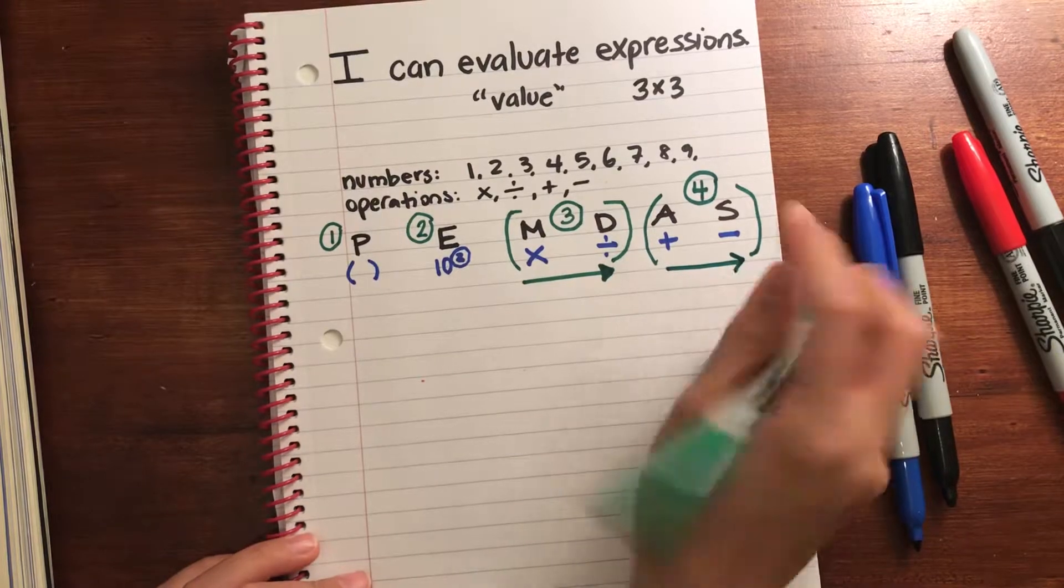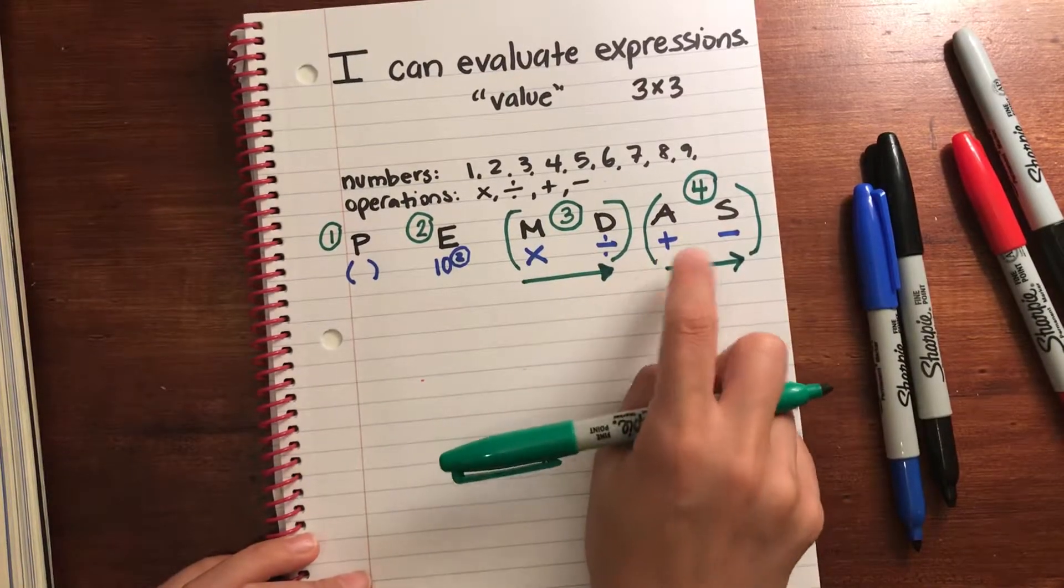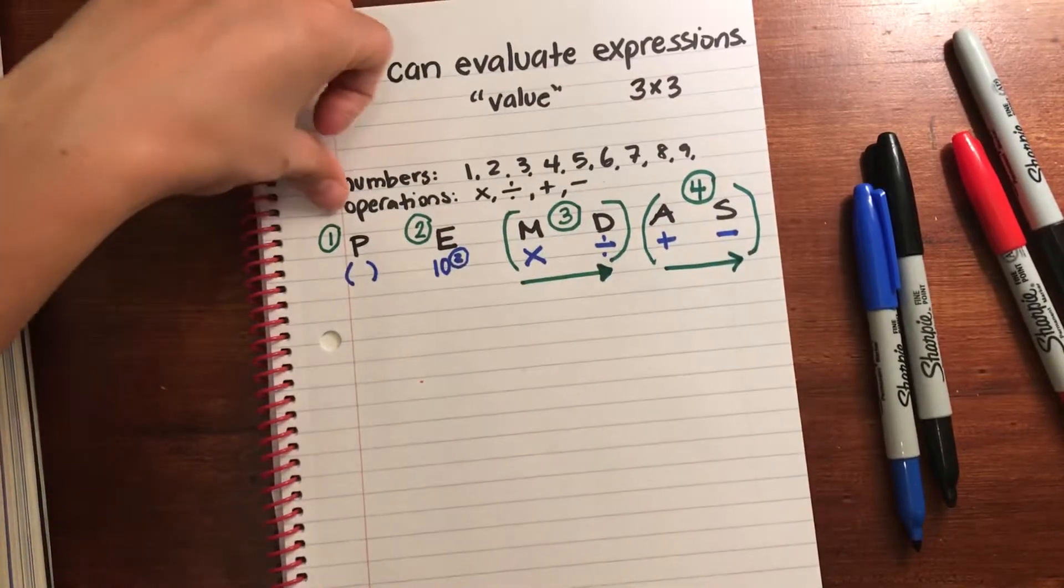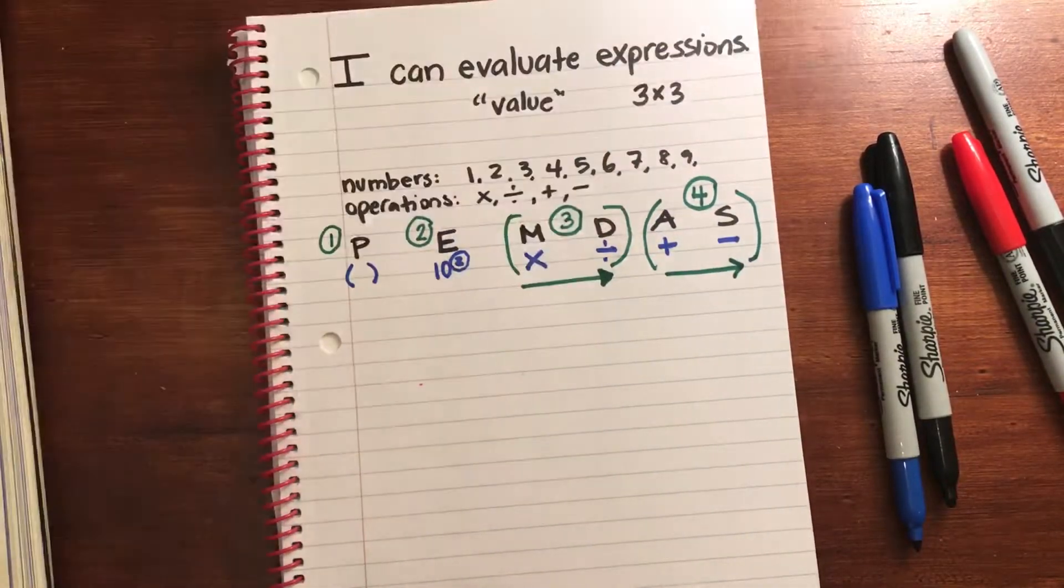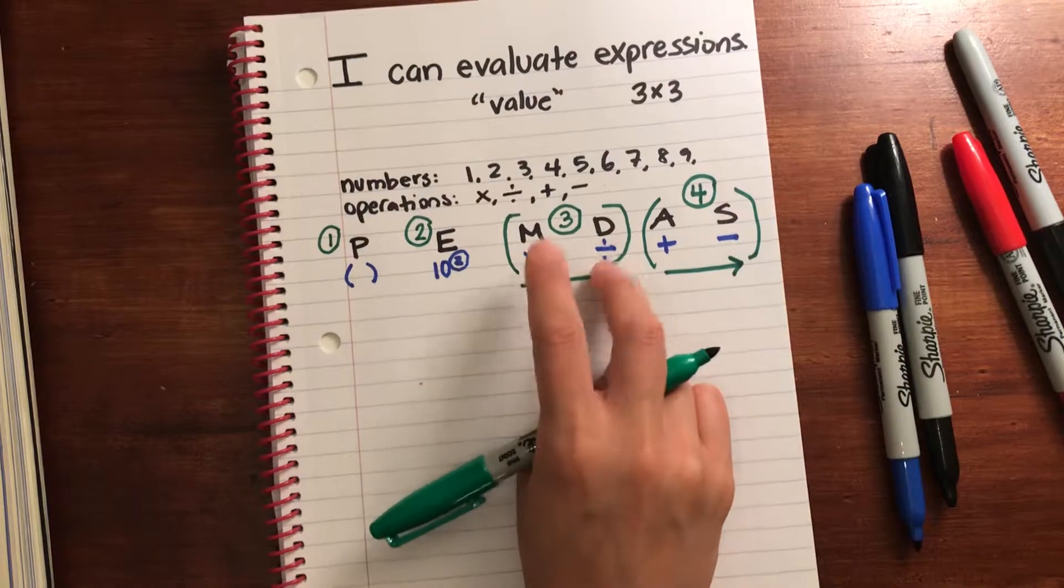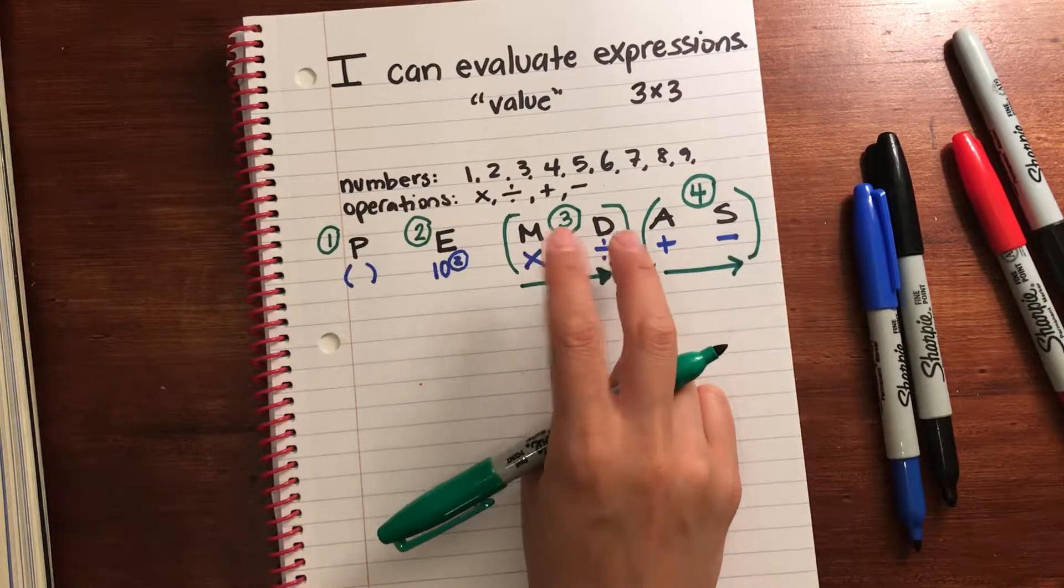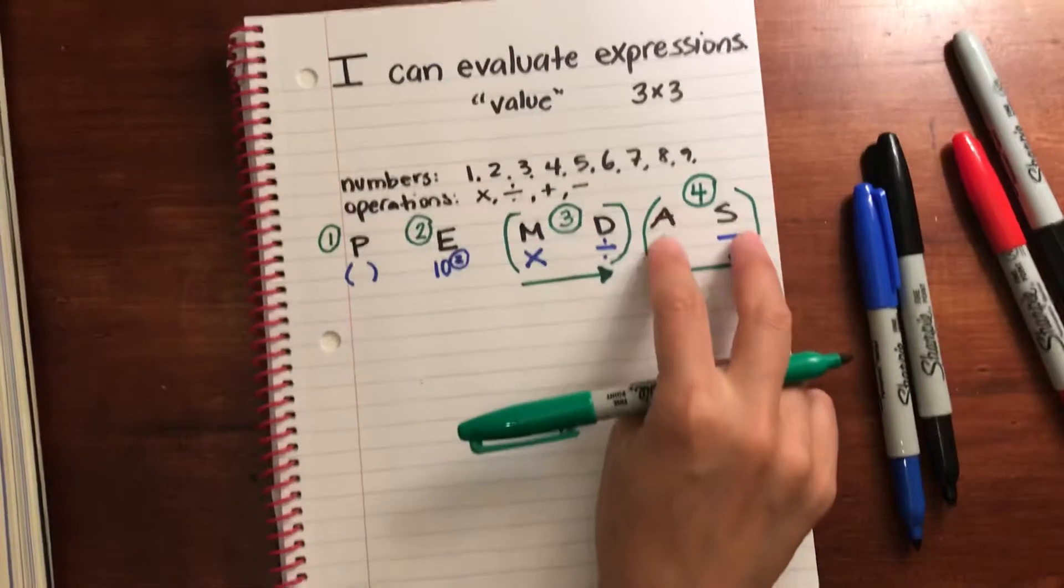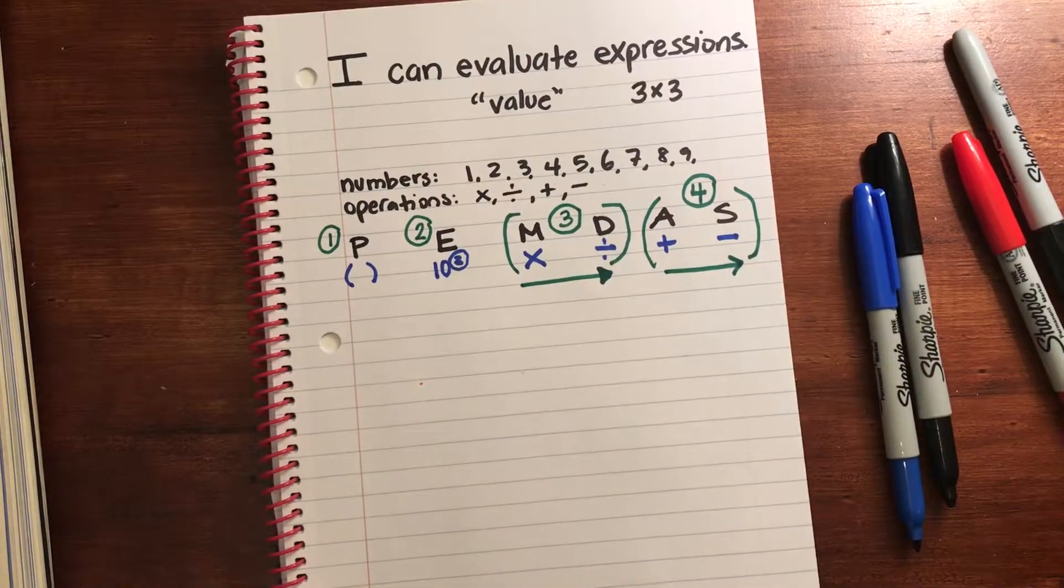Same thing with addition and subtraction. That's fourth. So if subtraction was over here, you'd evaluate first because it's from left to right. So really there's only 1, 2, 3, 4 steps, because multiplication and division you would evaluate first depending on which is further left, and addition and subtraction, same thing. And we'll look at some of those problems.